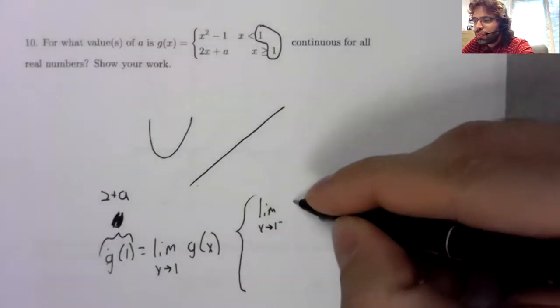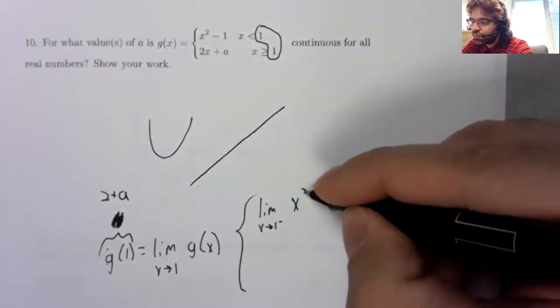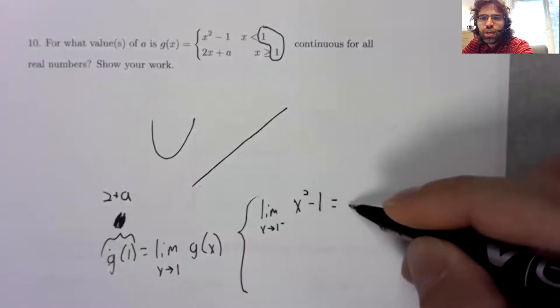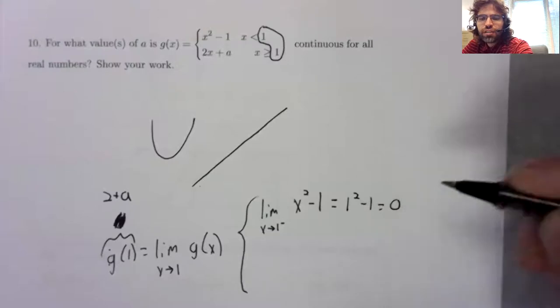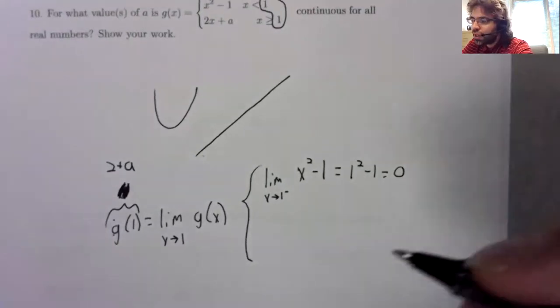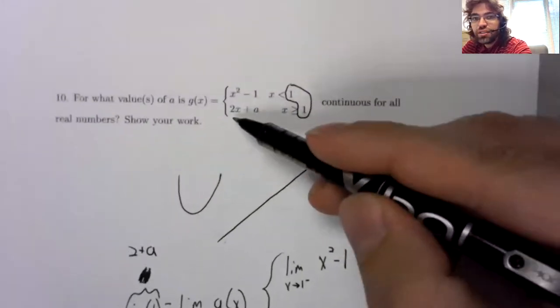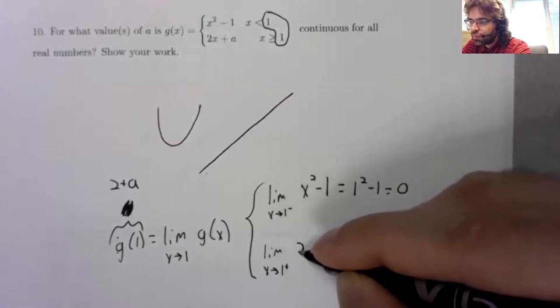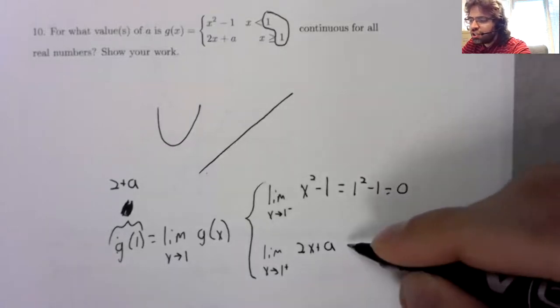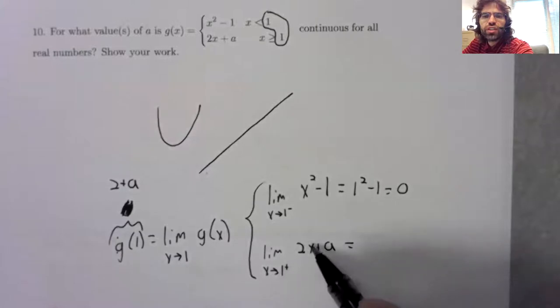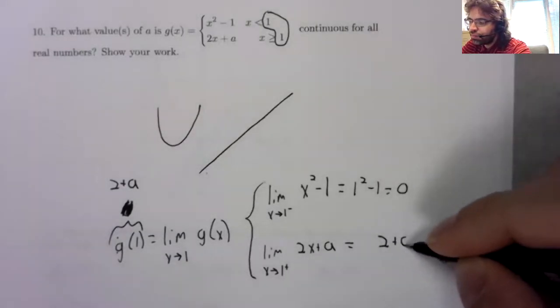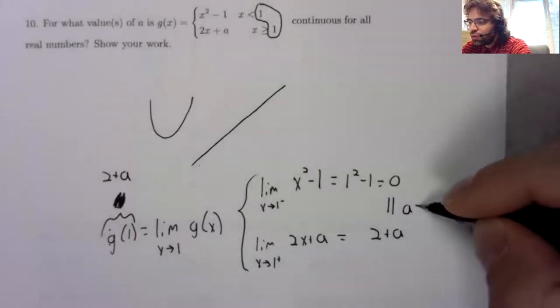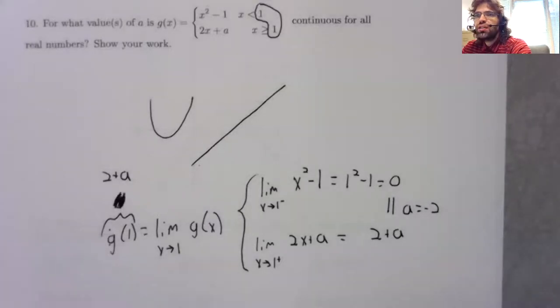If we approach one from the left, we're in this piece. And this limit, this is continuous. It's a polynomial. We can just stick one in there and get to zero. And the limit as we approach one from the right, well, we're in this piece. Again, this is continuous. To take the limit as we approach one, we just stick one in there. And for this limit to exist, these have to be equal. So a has to be negative two.